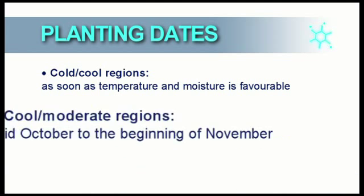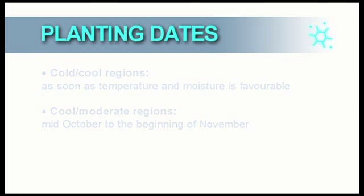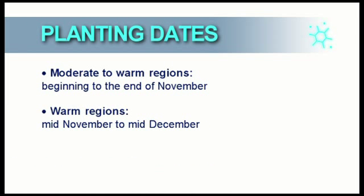In the cold to moderate regions, all soybeans can be planted from mid-October to the beginning of November. In the moderate to warm regions, all soybeans can be planted in November, and in the warm regions, all soybeans can be planted up to the middle of December.